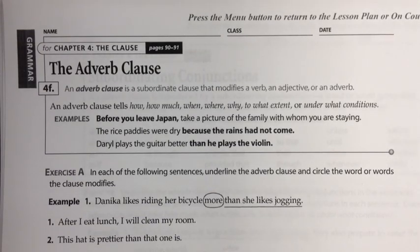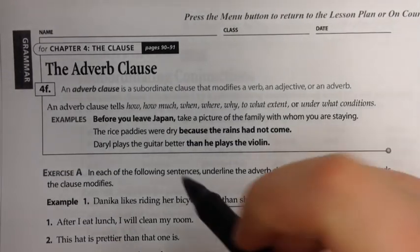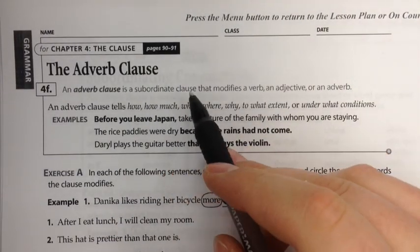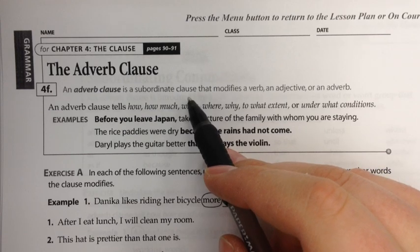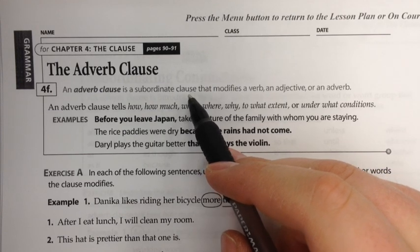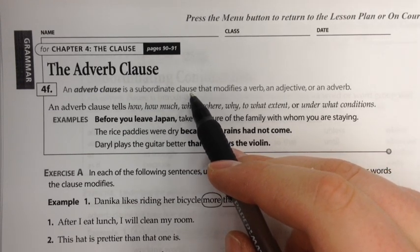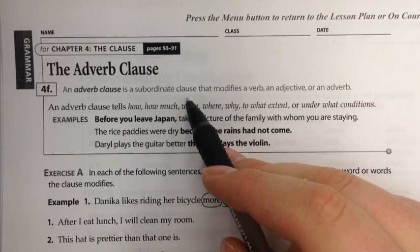Today's clause is called the adverb clause, and an adverb clause is a subordinate clause. A subordinate clause is a group of related words that has a subject and a verb, but it can't complete a thought. It doesn't stand alone as a sentence.